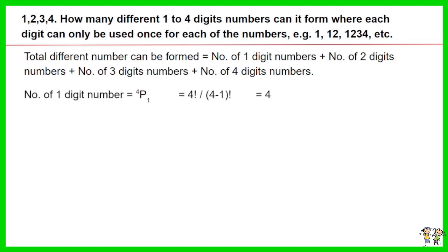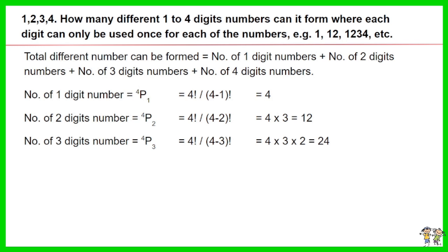Given the order within the number matters, thus we use the permutation of 4 for 1 digit, 2 digits, 3 digits and 4 digits to calculate the answer.